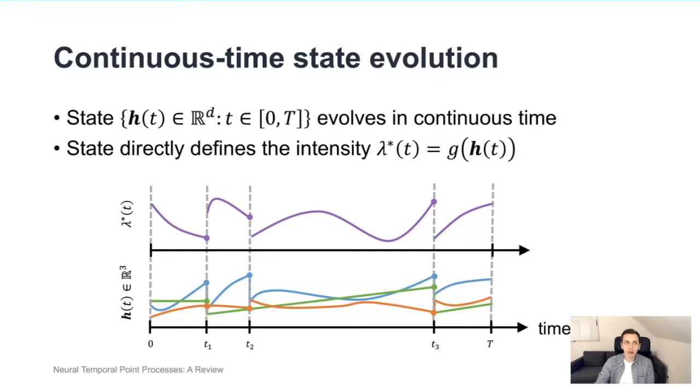The second big class of neural TPP models are based on what we call continuous time state evolution. In such models, we usually have some state which is represented by a vector that evolves continuously in time. You can see an example of this evolution in the lower part of the figure. The state usually evolves continuously in between the events, typically following some process described by an ordinary differential equation. But then, whenever an event happens, we will have a discrete update of the state which corresponds to a jump in the ODE. Then, the state that evolves in this pattern is used to directly define the conditional intensity function of our temporal point process. For example, we can feed the state through a multi-layer perceptron, and then pass it through some non-negative function, and get the conditional intensity at each time in space. And specifying the conditional intensity completely defines our temporal point process.